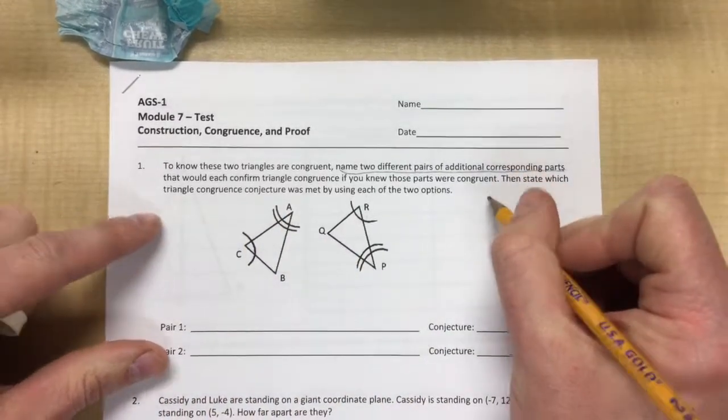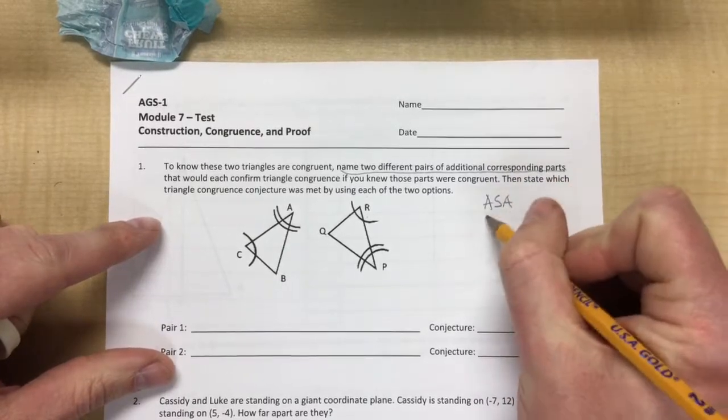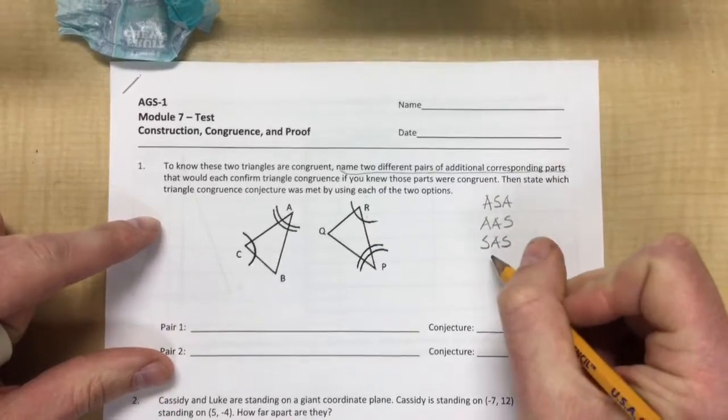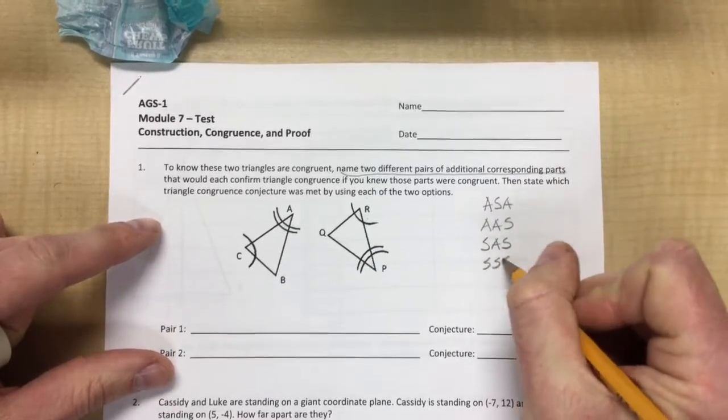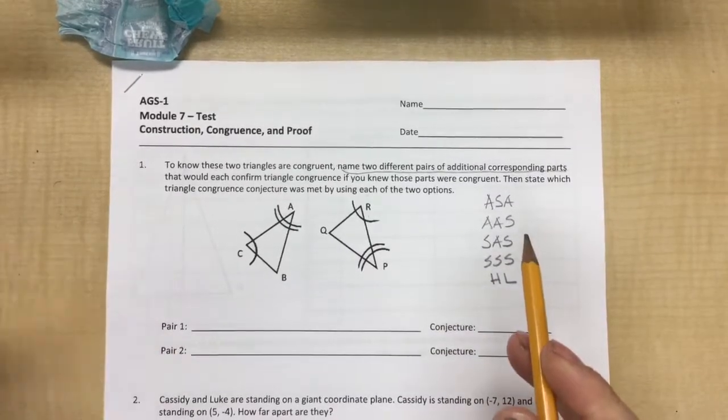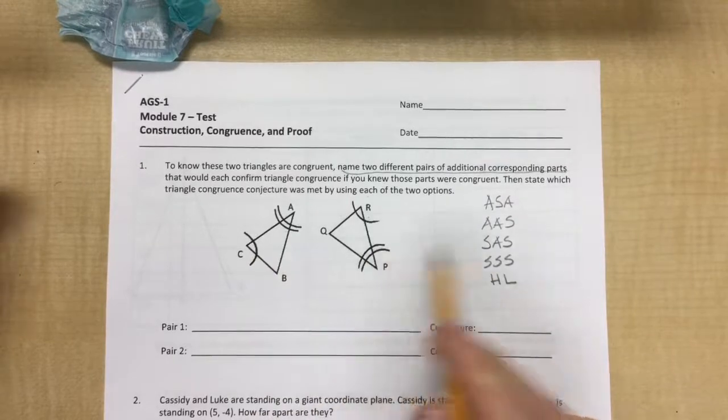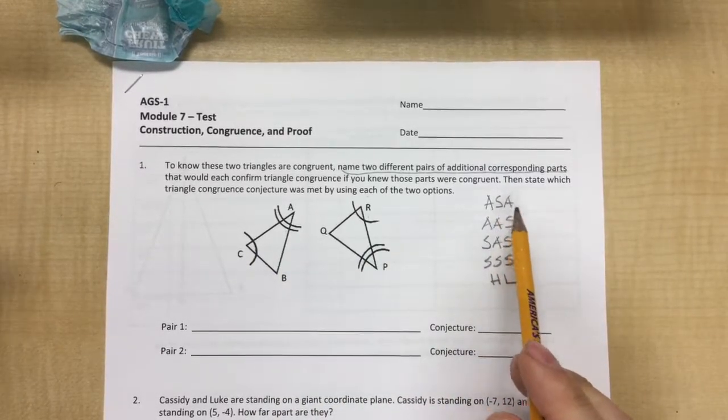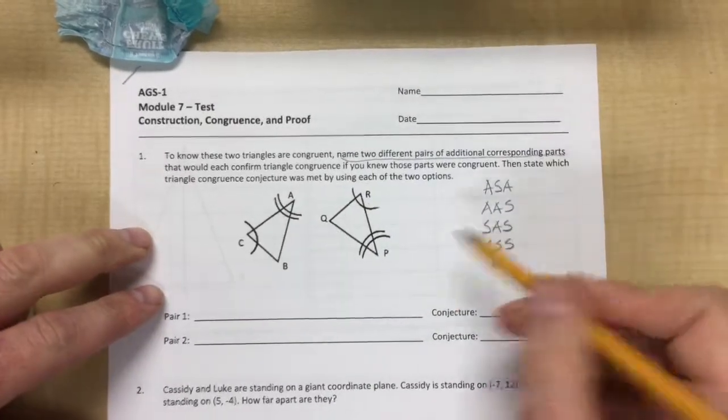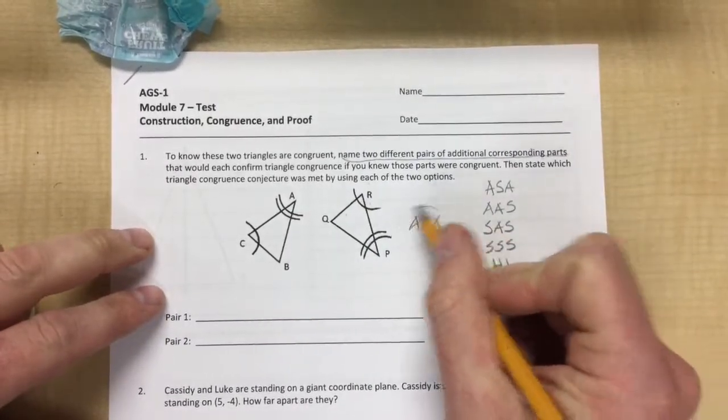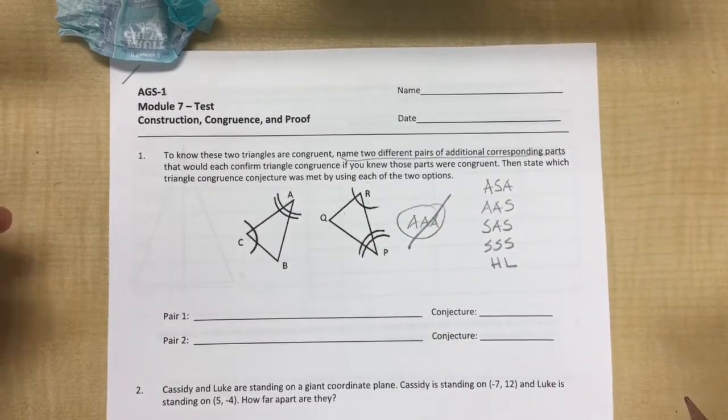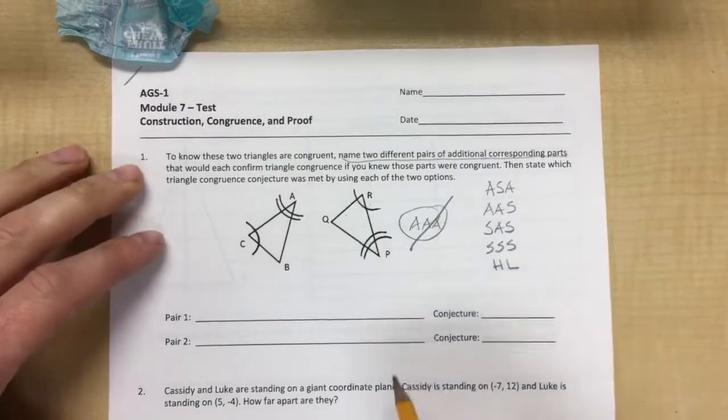Which are the ASA, the angle angle side, the side angle side, the side side side, and the HL. So the way it's marked right now is just AA, angle angle, which is not one of them. So I could go through and say that B is Q, which some people did as well, but AAA is not one of them.